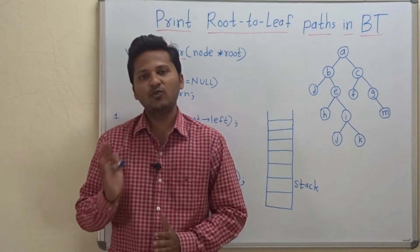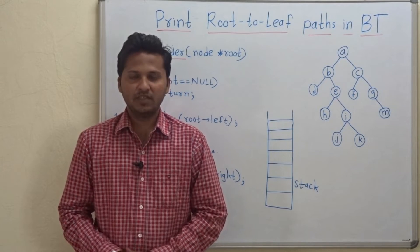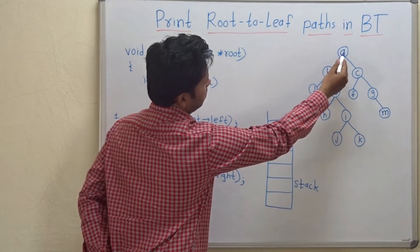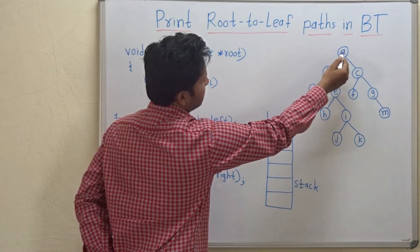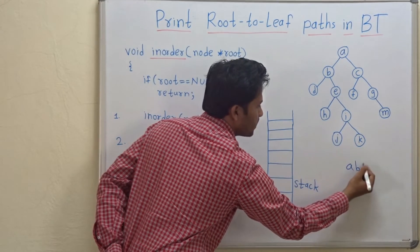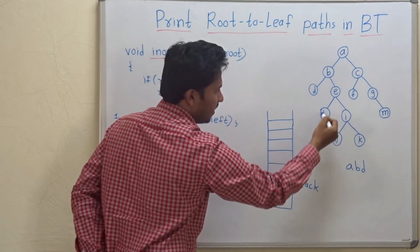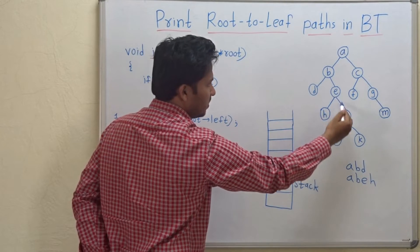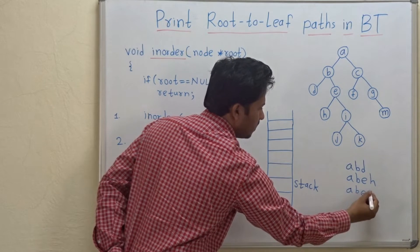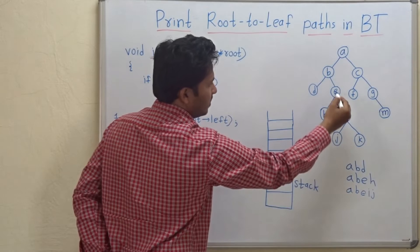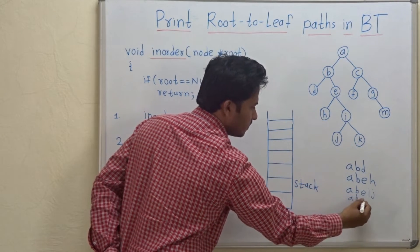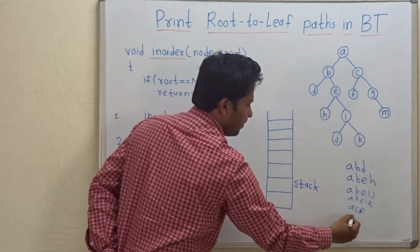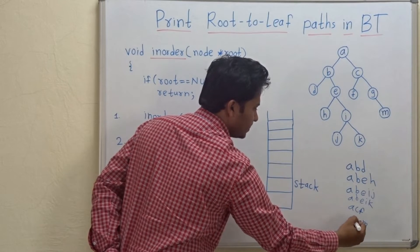Hello friends, today we are going to see how to print root to leaf paths in a binary tree. So let's see an example. In this binary tree the root is A, and the root to leaf paths are: first path is ABD, second path is ABEH, third path is ABEIJ, then ABEIK, similarly ACF and ACGM. These are the root to leaf paths.